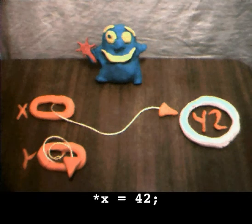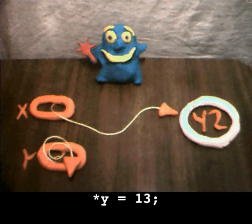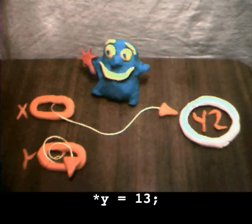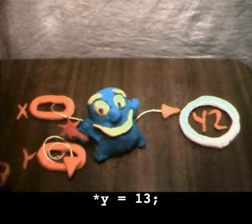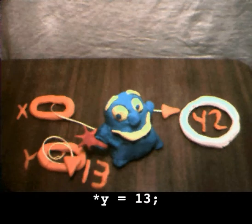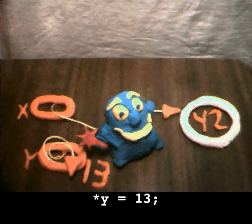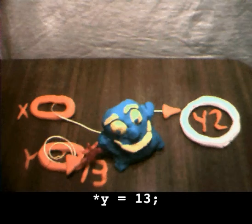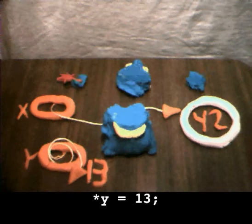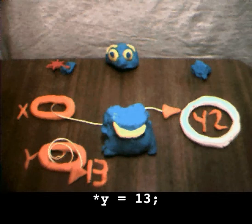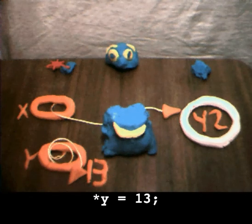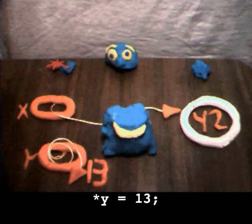Hey, try using it to store the number 13 through the other pointer, y. Okay, I'll just go over here to y, and get the number 13 set up, and then take the wand of dereferencing, and just... Whoa! Hey, that didn't work. I don't think dereferencing y is a good idea, because setting up the pointee is a separate step, and I don't think we ever did it.